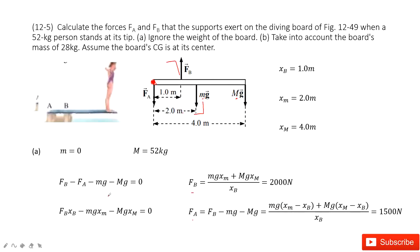For the first situation, the small m is zero, so we ignore the weight of the board. This one is zero, and capital M is 52 kg. Input the known quantities, you can find the answer.